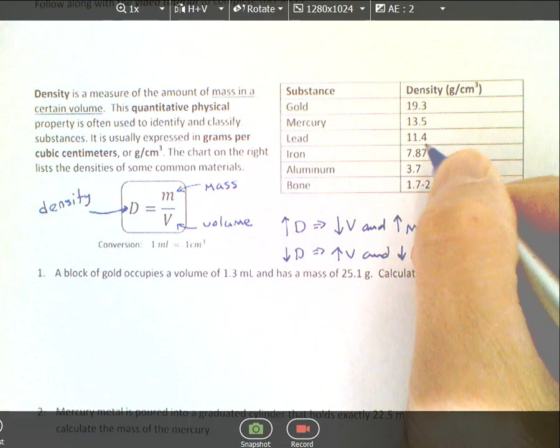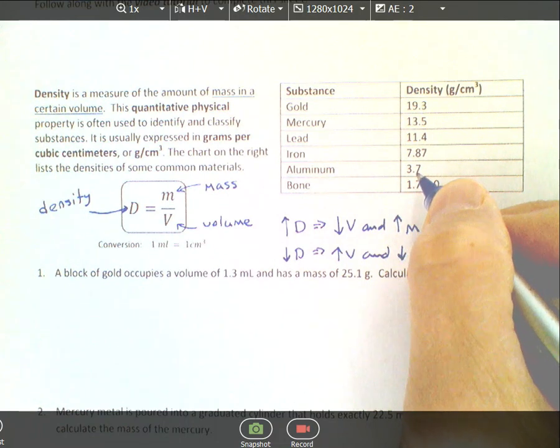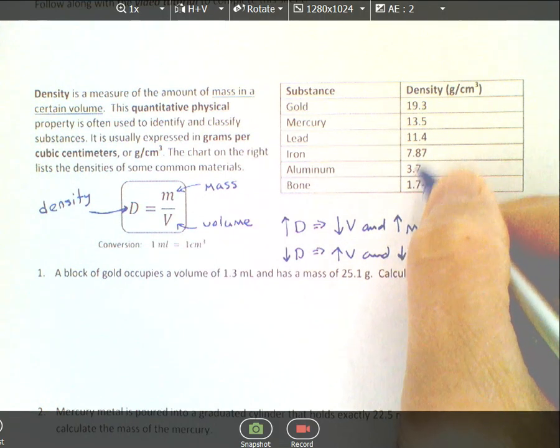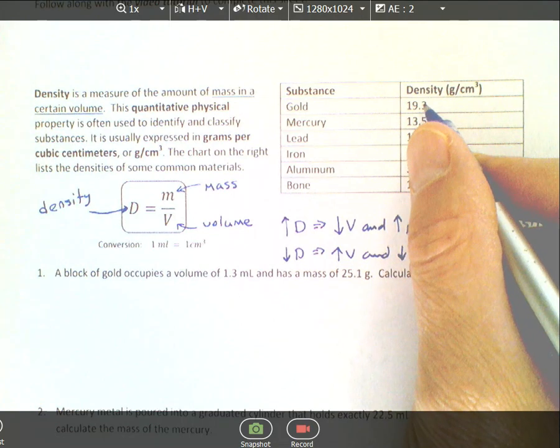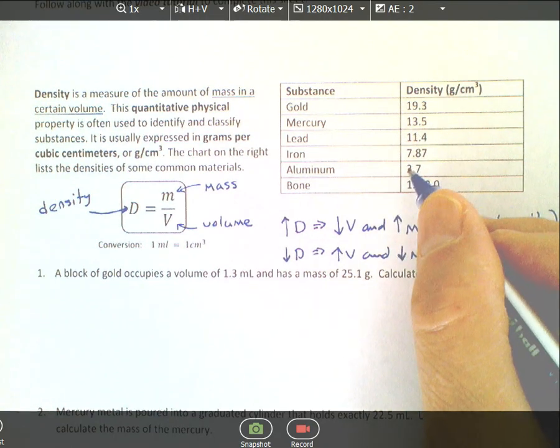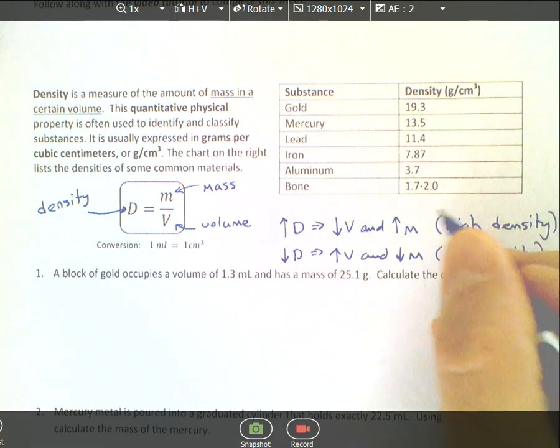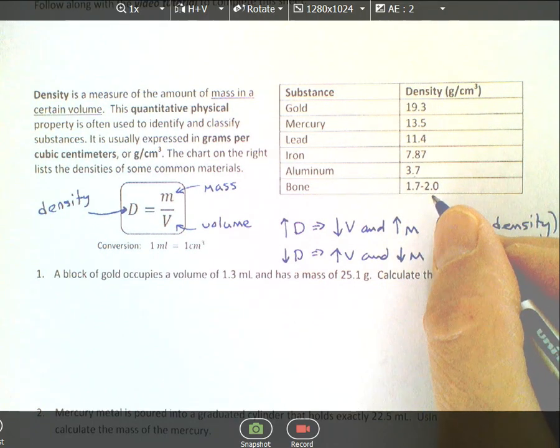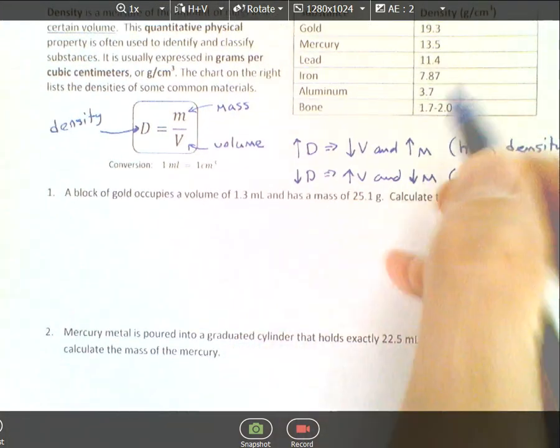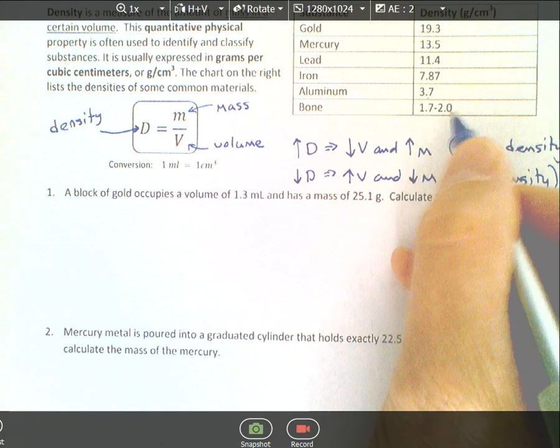Mercury is a little less dense, lead's even less dense, iron's much less dense. Aluminum's really not very dense, which is why aluminum cans feel light. You don't want to make cans out of gold because it would be expensive and much heavier. We don't make cans out of lead because it would be heavier and poisonous. Bone ranges from 1.7 to 2.0, depending on age, calcium intake, and whether you have diseases affecting bone marrow.